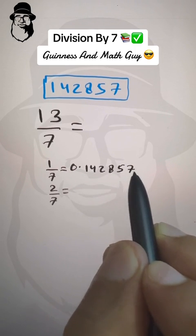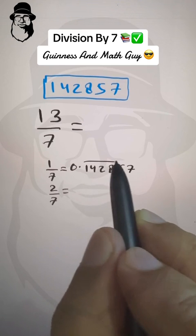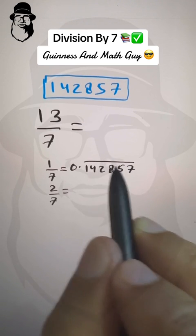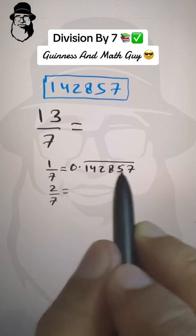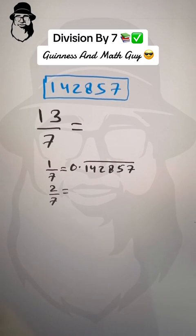1, 4, 2, 8, 5, 7, 1, 4, 2, 8, 5, 7, 1, 4, 2, 8. It goes on forever. So this is a bar. This same 6 digits will be repeated forever.